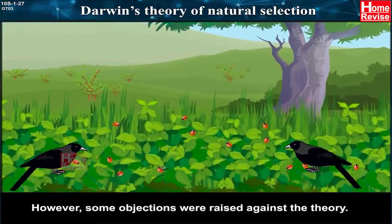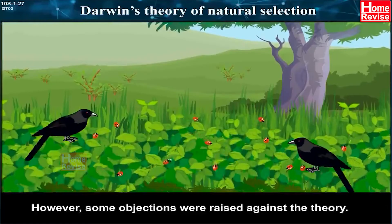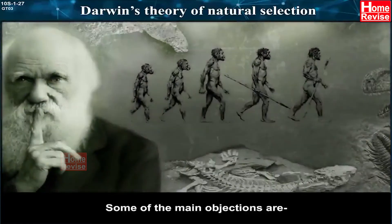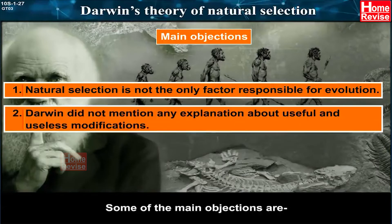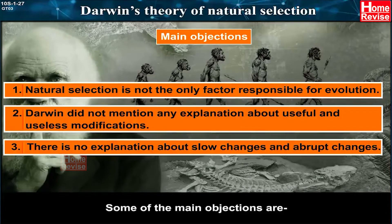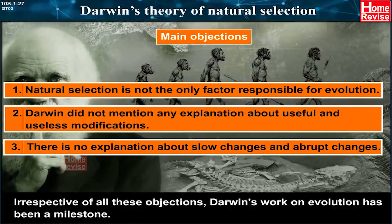However, some objections were raised against the theory. The main objections are: 1. Natural selection is not the only factor responsible for evolution. 2. Darwin did not mention any explanation about useful and useless modifications. 3. There is no explanation about slow changes and abrupt changes. Irrespective of all these objections, Darwin's work on evolution has been a milestone.